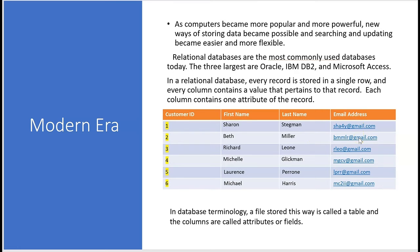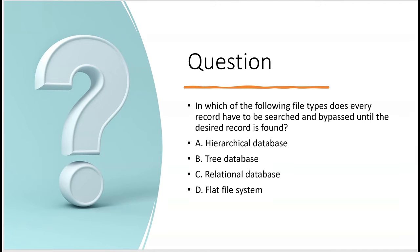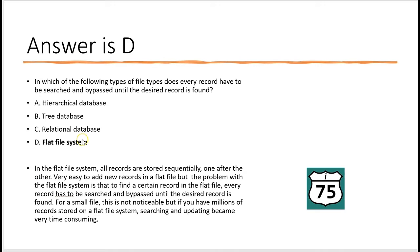Record number two is customer number two, Beth Miller — each column contains one attribute of her record, including her email address. Let's try a question: in which of the following file types does every record have to be searched and bypassed until the desired record is found? That's the flat file system, where all records are stored sequentially. Easy to add new records, but for big companies with millions of records, searching and updating became too time consuming.